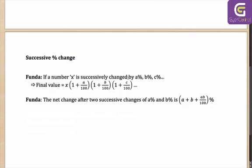Here is how you can solve these questions. If you have an A% change, then a B% change, then a C% change, it is effectively given by X × (1 + A/100) × (1 + B/100) × (1 + C/100). Let's say if there was an original value of 100, which increased by 10%, then by 20%, then by 30% — what will be the final value?